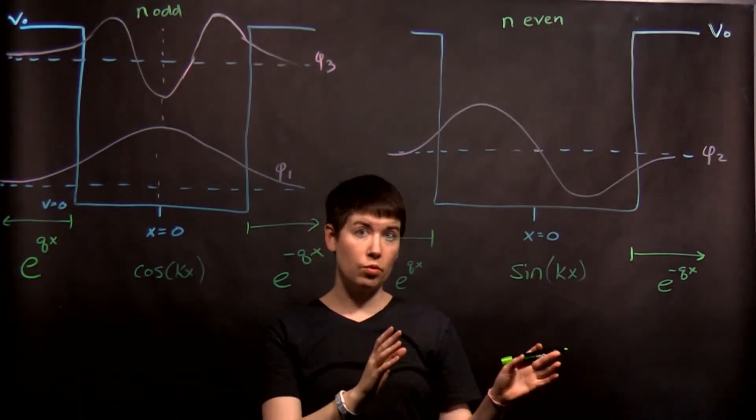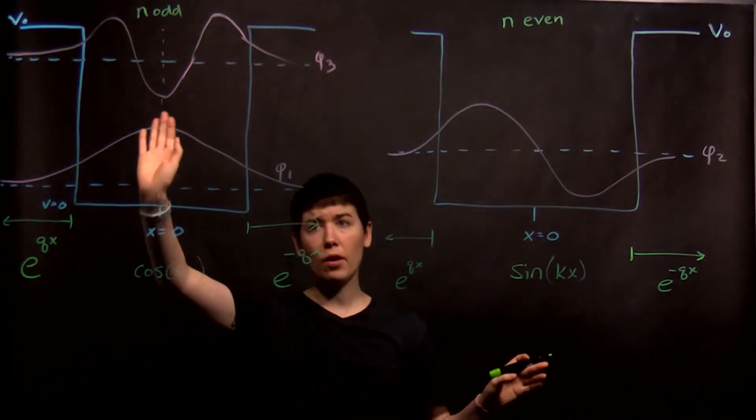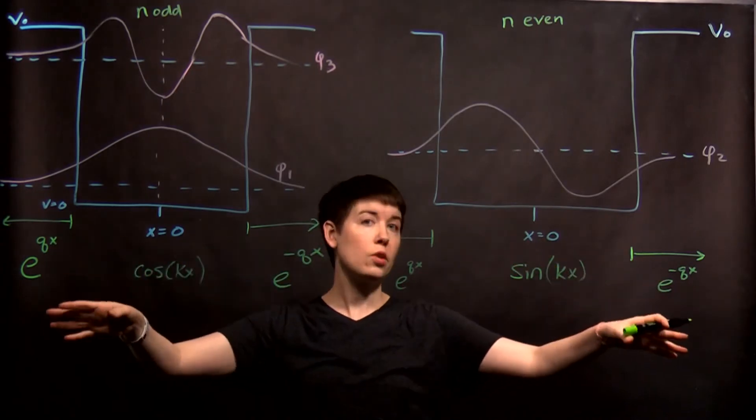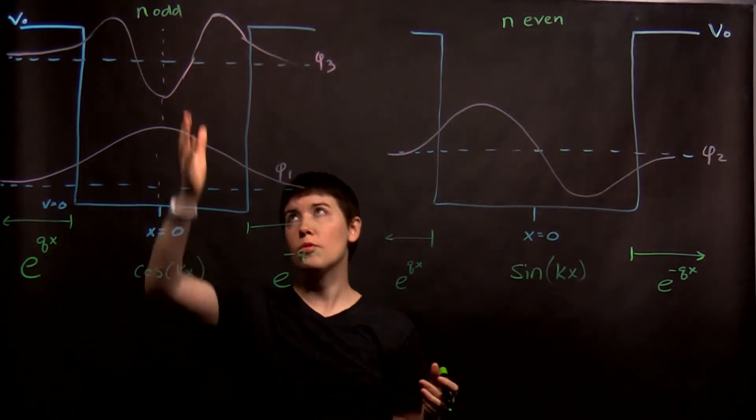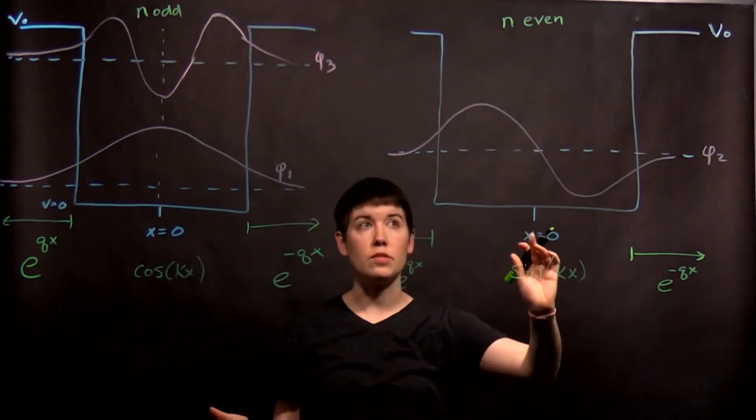So again, we have these three regions, to the left of the well, in the well, and to the right of the well. And so whether we're talking about n equals odd or n equals even, the overall shapes outside of the well are the same. Inside it's sinusoidal, but for one we have the symmetry that says it has to be cosine. For another we say it has to be sine.